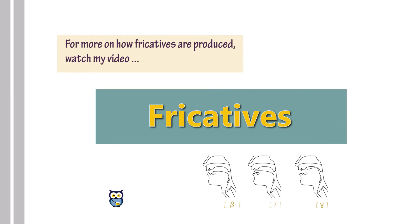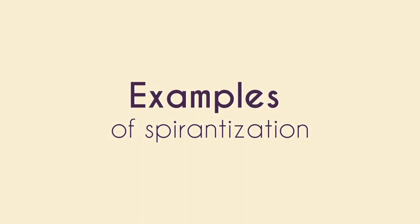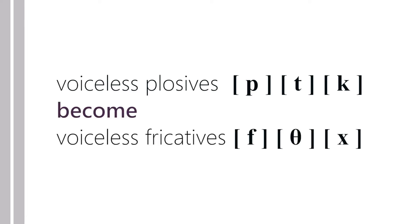For more on how fricatives are produced, watch my video entitled Fricatives. Examples of aspirantization are when voiceless plosives become voiceless fricatives. You might ask yourself, why would such a thing happen?